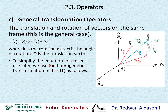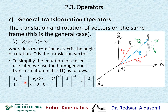To simplify the equation for easier use later, we can use the homogeneous transformation matrix T. We place the rotation matrix about K by theta degrees — that's a three-by-three rotation matrix — alongside Q relative to A, which is a three-by-one translation vector. Then the last row is the standard zero, zero, zero, one. That gives us the four-by-four transformation matrix.